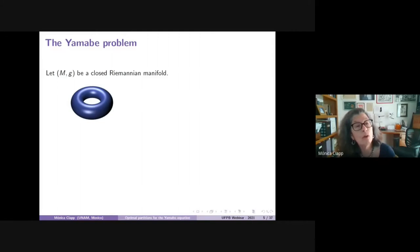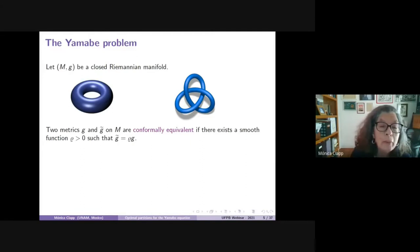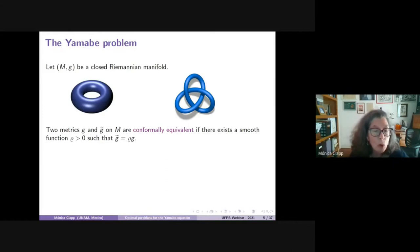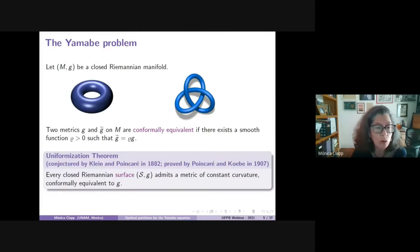Let me remind you what the Yamabe problem is. If one has a manifold with a metric g and wants to classify manifolds, one way is by conformal equivalence. Two metrics g and g-tilde on M are conformally equivalent if there exists a smooth positive function rho such that g-tilde equals rho times g. This means at each point one metric is a positive multiple of the other, and rho varies smoothly along the manifold.